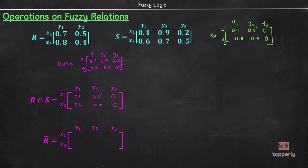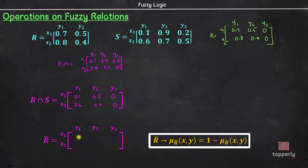Coming to R complement, the membership value of ordered pair x1, y1 is given by 1 minus 0.7 which is 0.3. For x1, y2, we have 1 minus 0.5 which is 0.5. Here, we have 1 minus 0 which is 1 and here 0.2, 0.6 and 1. So, this is the matrix for R complement. Similarly, we can find out for S complement also. I will leave that as a homework for you.